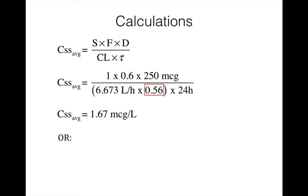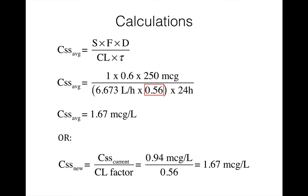There's another way to do this: we determine the new steady state concentration by dividing the current steady state concentration by the clearance adjustment factor. So 0.94 micrograms per liter divided by the clearance adjustment factor of 0.56 equals 1.67 micrograms per liter. Our concentration will have gone up from 0.94 to 1.67 based on the drug interaction.